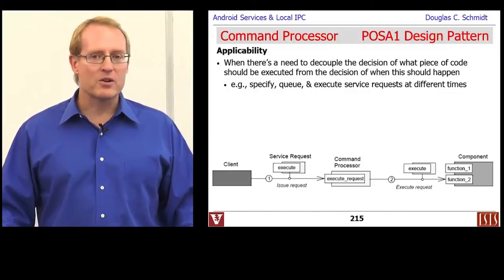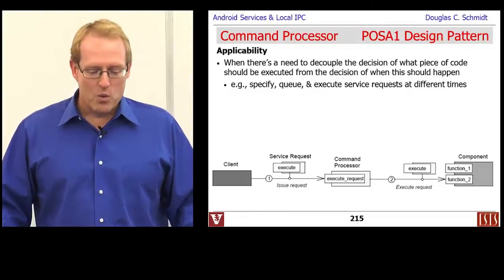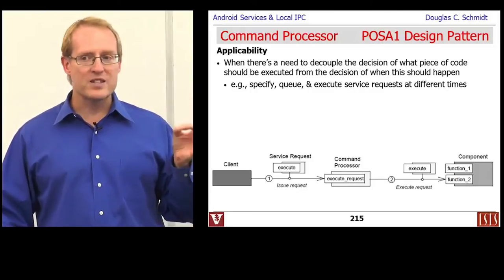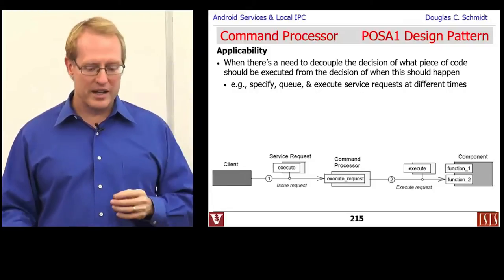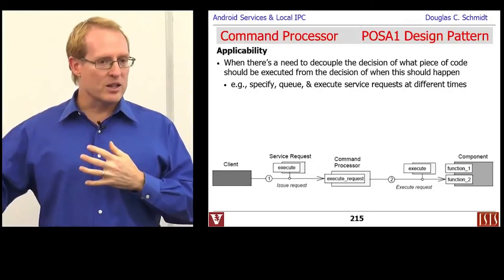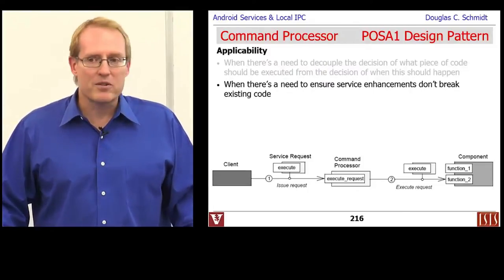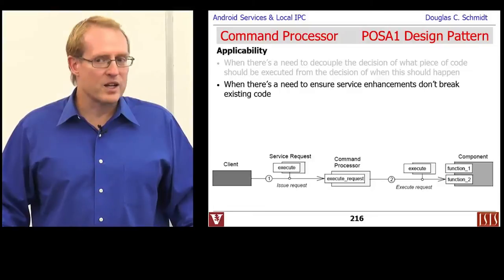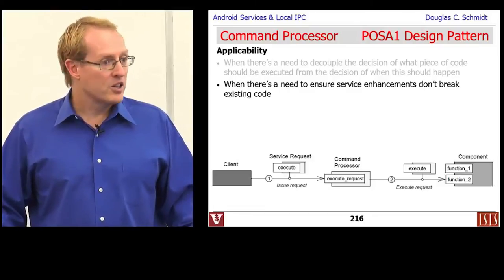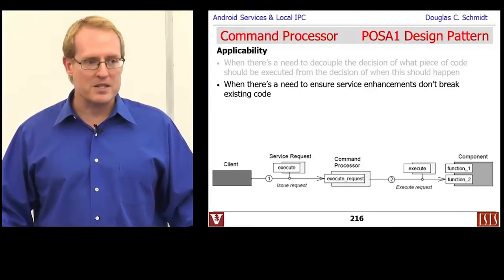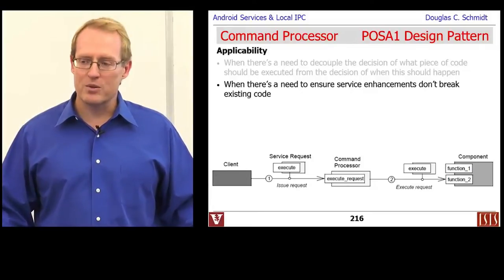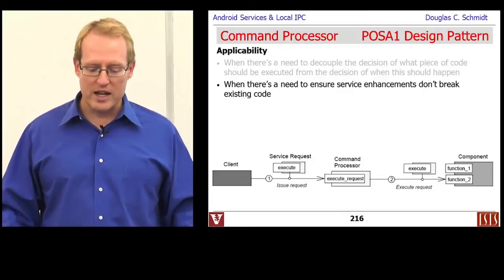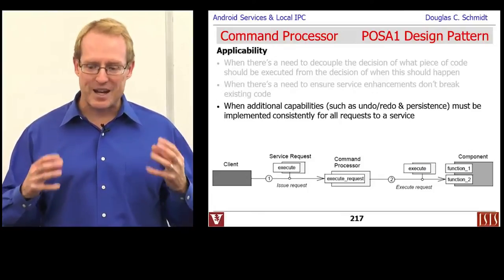When would you want to apply this pattern? One circumstance is where you want to decouple the decision of what code to execute from the decision of when the code should be run—you might want to specify what to run and then queue it and execute it later in some other context. You also might want to change the implementation of your service without breaking the client code that relies on it. You don't want to change the interface and recompile the client. You want to pass a more loosely coupled, message-like abstraction that's more flexible and adaptable. The key thing here is avoiding tight coupling.